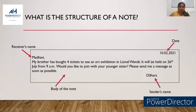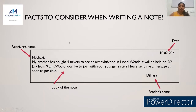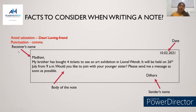Let's look at the components one more time: the date, receiver's name, body of the note, and finally the sender's name. Now, when you write the receiver's name, avoid salutation. No need to write 'dear Madhavi' or 'dear aunt' — you can omit the salutation. But remember, you definitely need to use a comma after the name of the receiver. After 'Madhavi', you can see the comma is placed here.